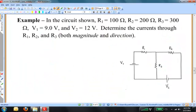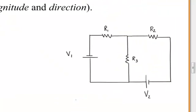Let's try another example — you won't find this one in your textbook. In the circuit shown, R1 equals 100 ohms, R2 is 200 ohms, R3 is 300 ohms, V1 equals 9 volts, V2 equals 12 volts. Determine the currents through R1, R2, and R3, with both magnitude and direction. Let's start by seeing which way the batteries tend to push the currents in each of those loops.